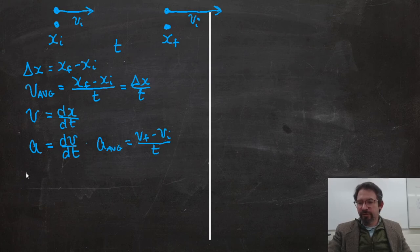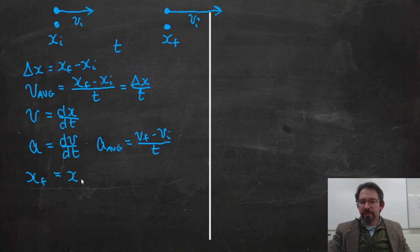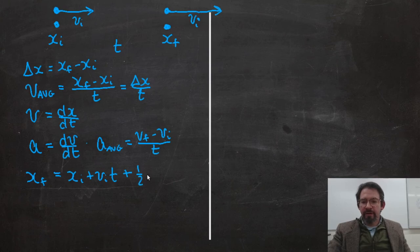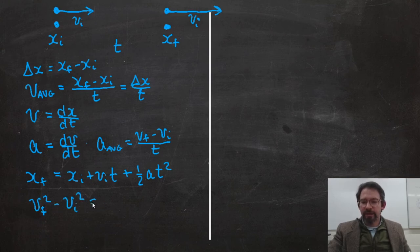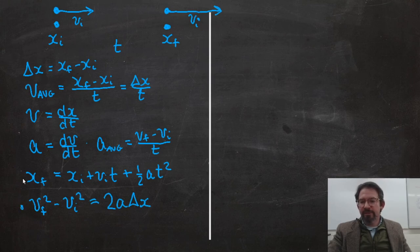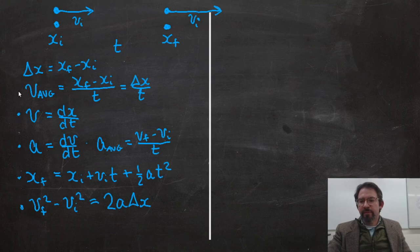We also have relationships like my final position, if I have constant acceleration, and an initial velocity, vi, will be my initial position plus my initial velocity times time plus one-half my acceleration times time squared. You can review where that came from, but that's an important relationship. We also have the relationship that final velocity squared minus initial velocity squared is equal to 2 times the acceleration, this is in the case of constant acceleration, times how far the object traveled. These are all equations of kinematics that we use when things are moving from place to place.